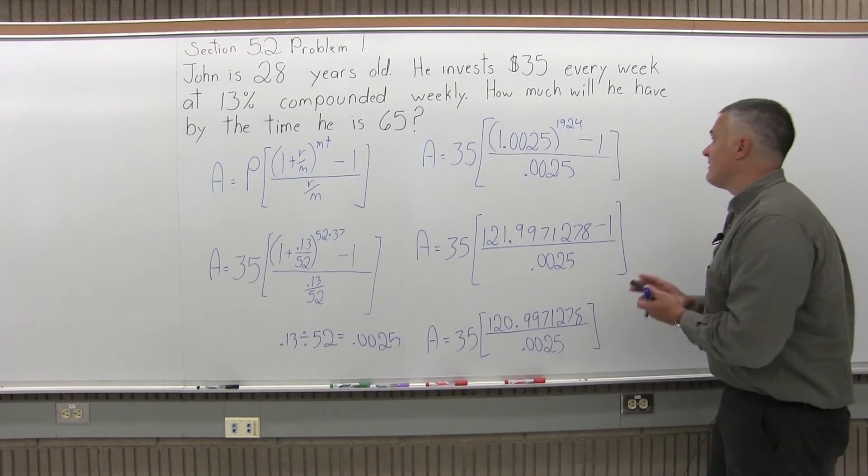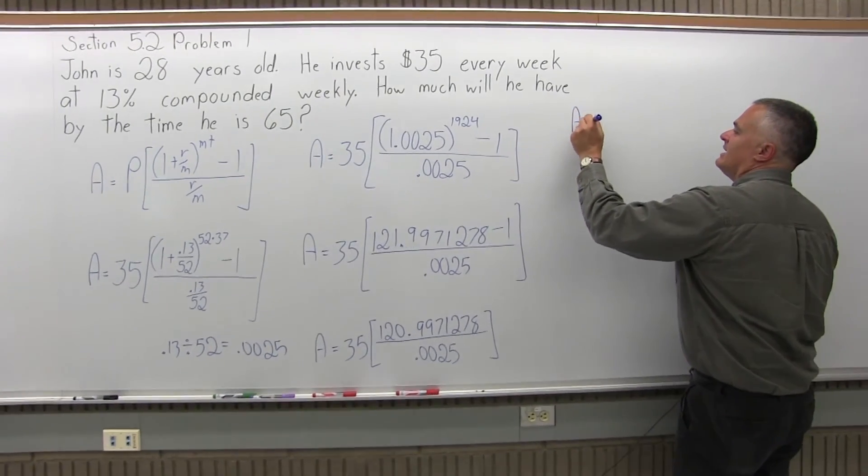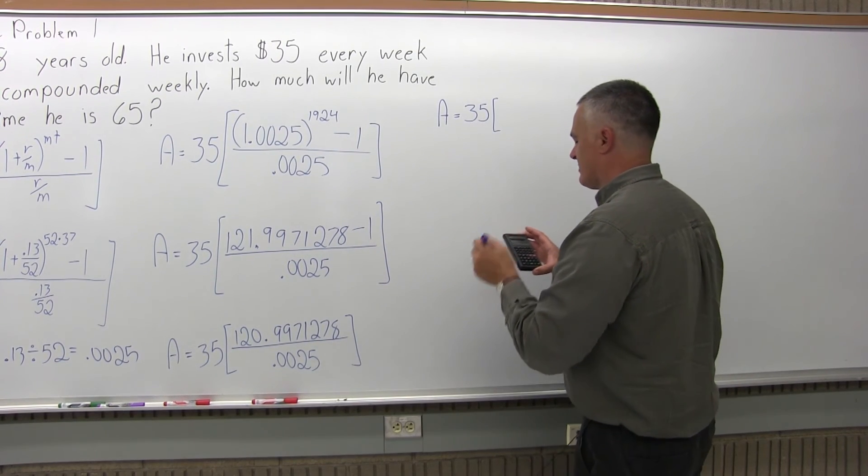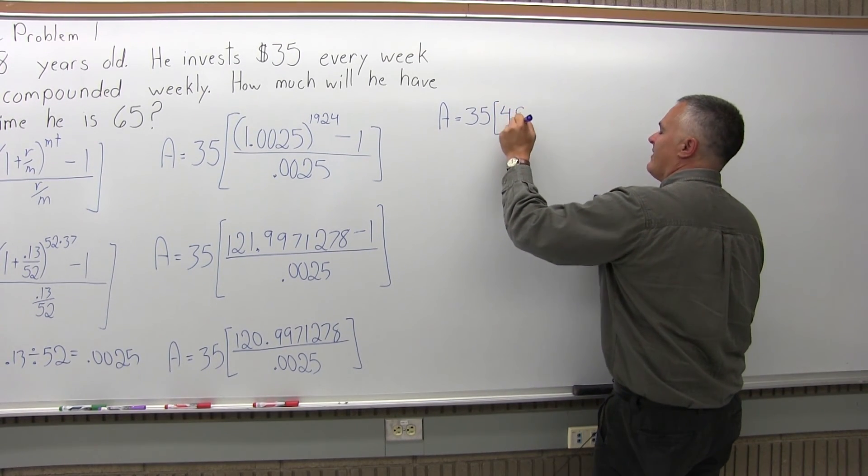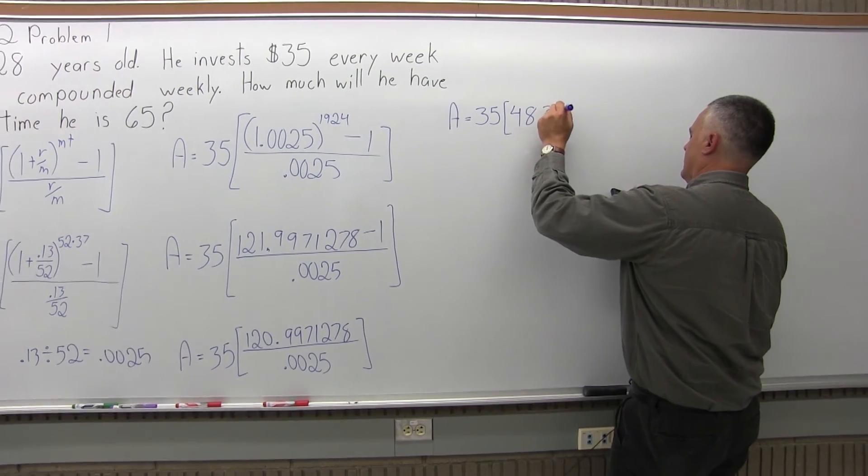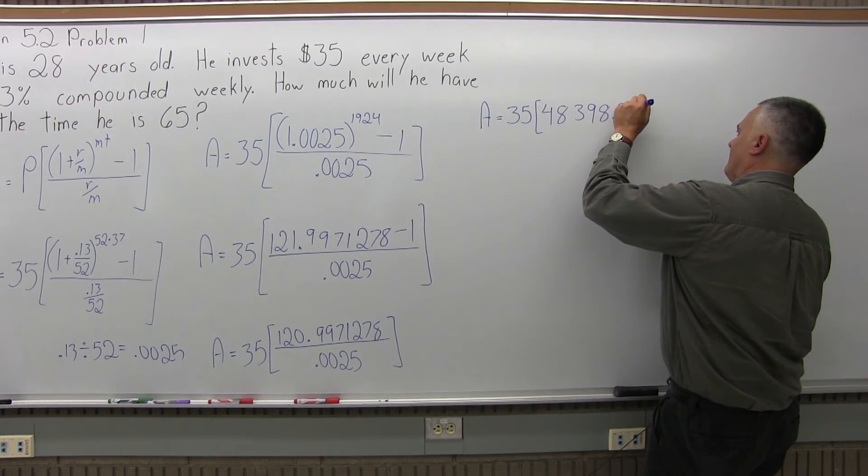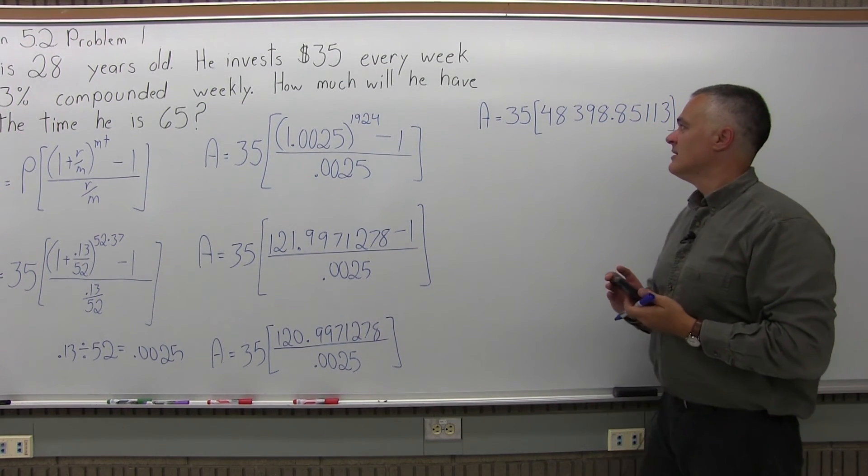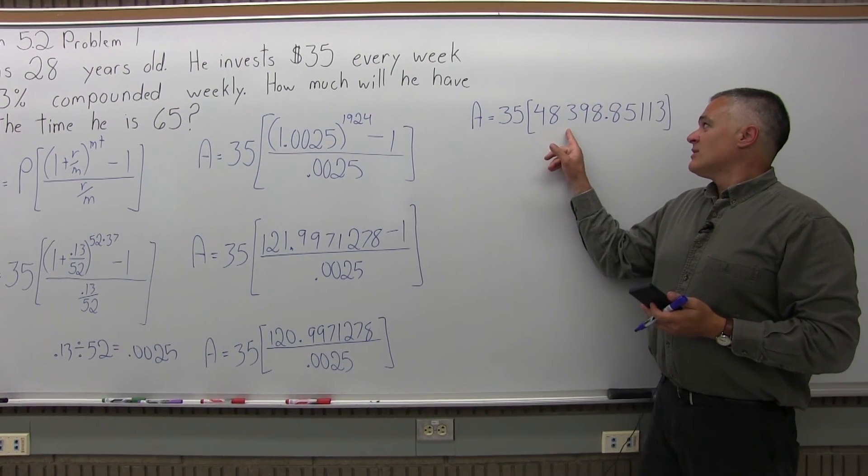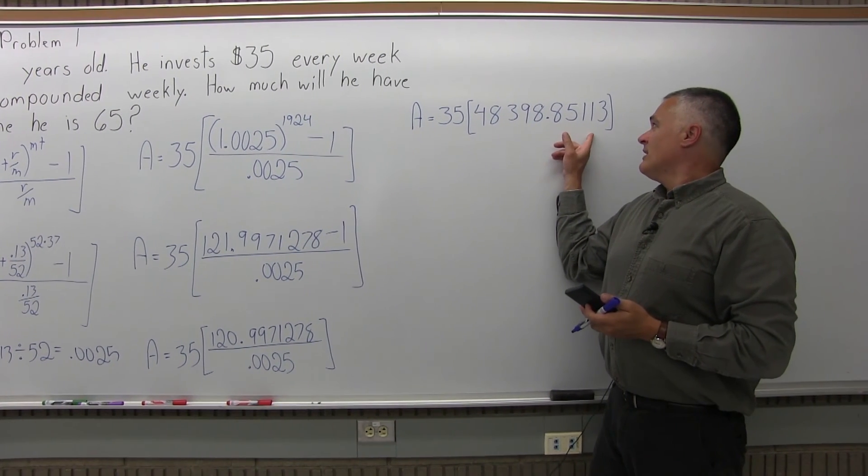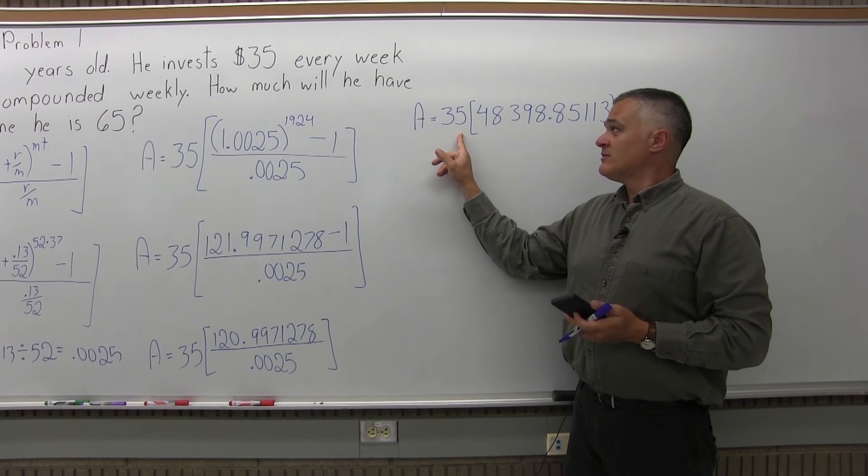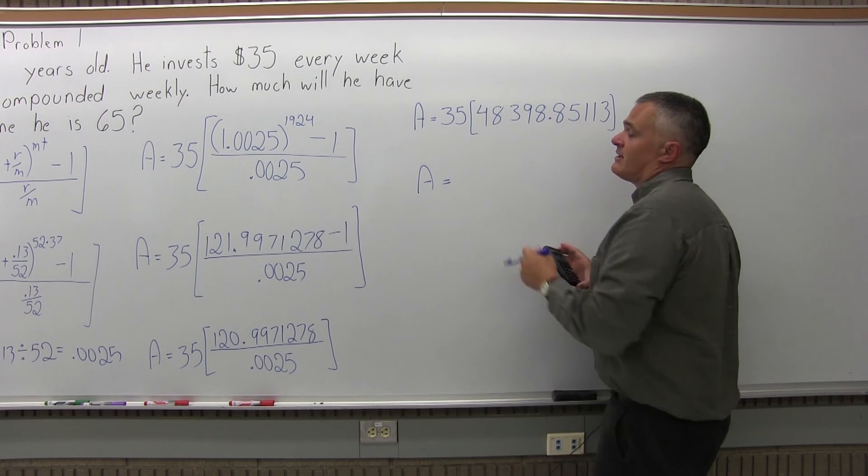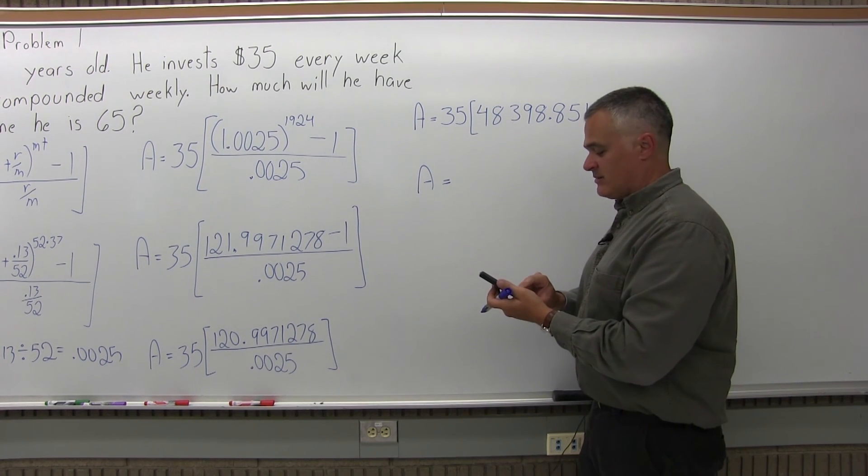So what we have now is A equals 35 times, and what I just said is 48,000 and something, specifically 48,398.85113. And again, I'm just going to let all those decimals stay for the time being. So to finish the problem off, I'm going to take the 48,398.85113 and multiply it times the 35 that's in front of the brackets. And since the 48,000 is on my calculator screen now, I'm just going to go times 35.